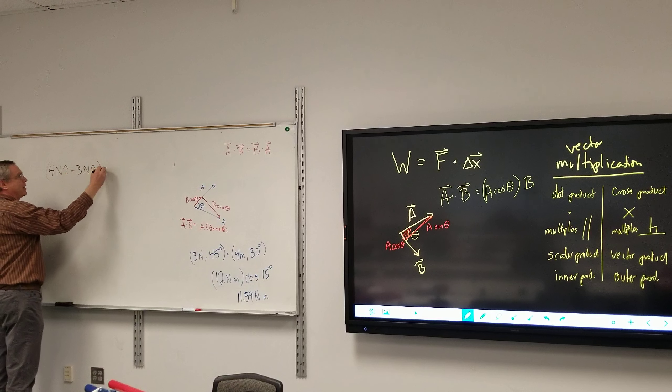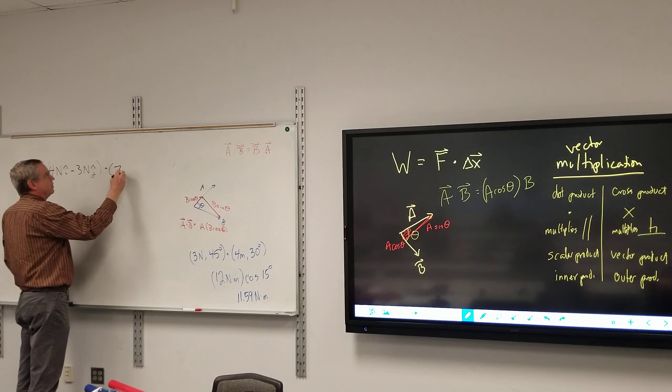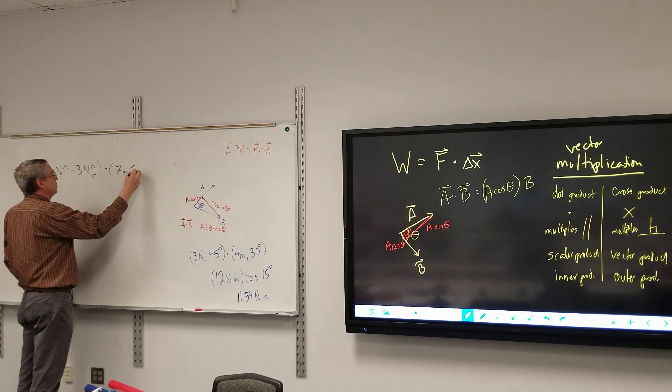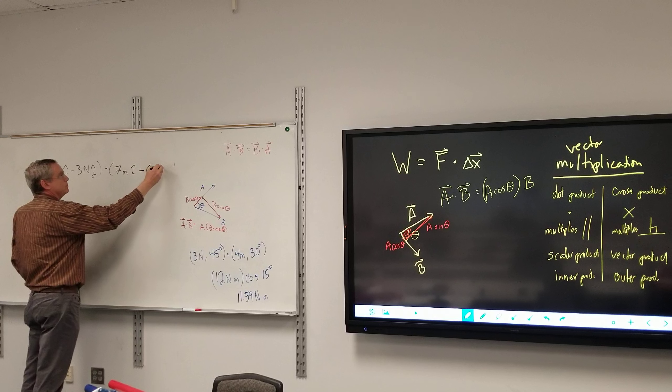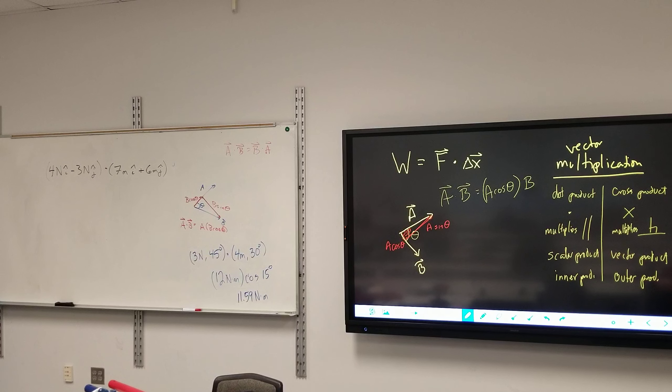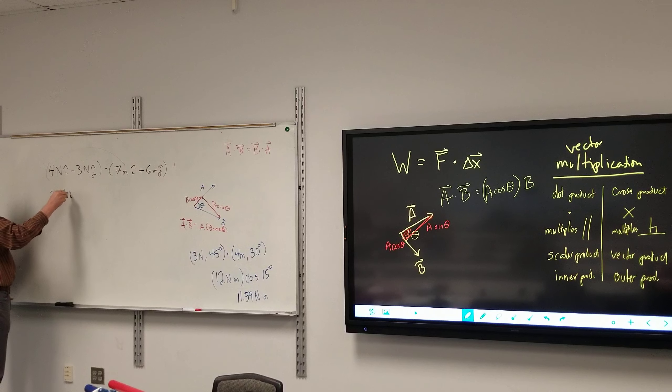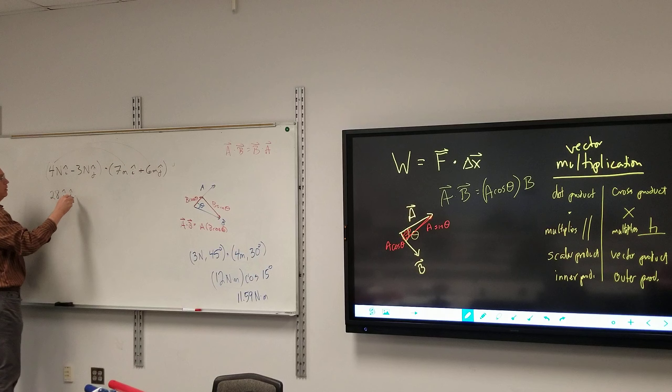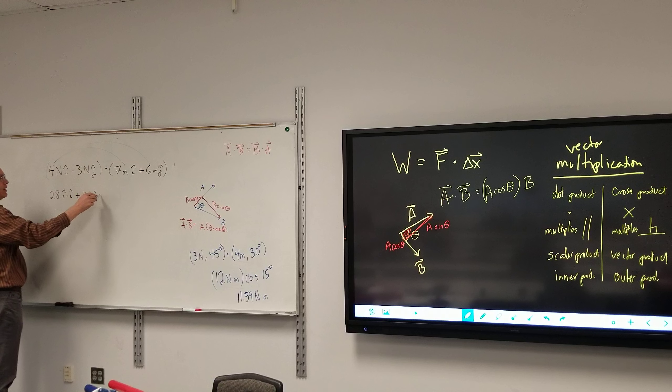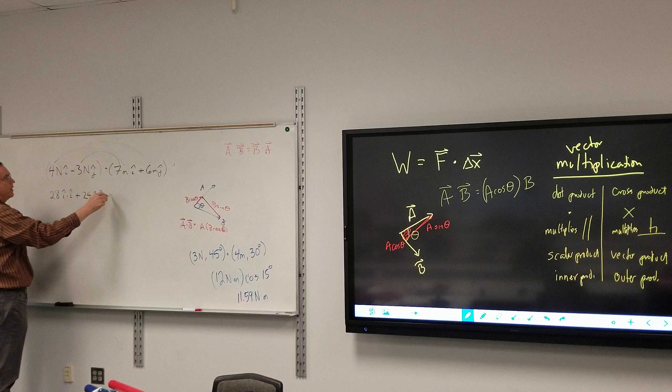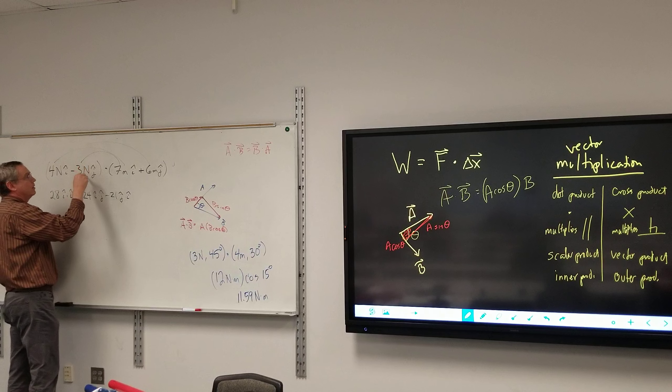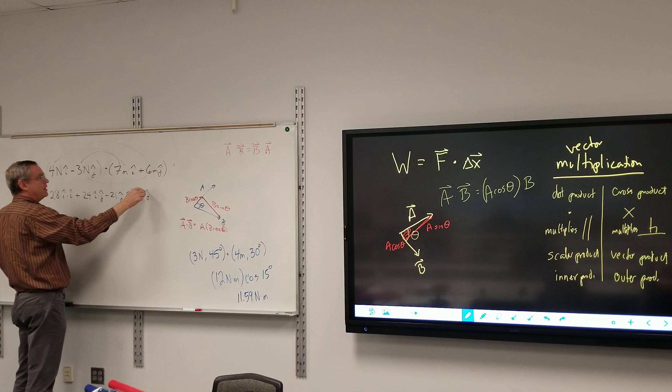J hat dot product with seven meters I hat plus six meters J hat. Well you can foil. Let's do it one way first. If I multiply the first ones together I get 28, I'll worry about units at the end, I hat dot I hat, then outer plus 24 I hat dot J hat, minus 21 J hat dot I hat, minus 18 J hat dot J hat.